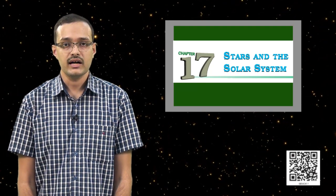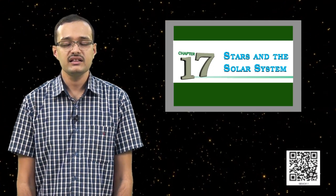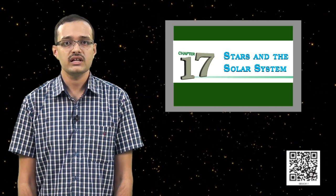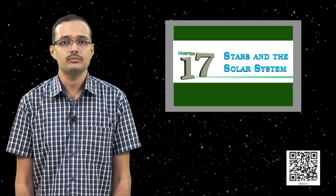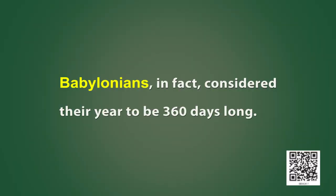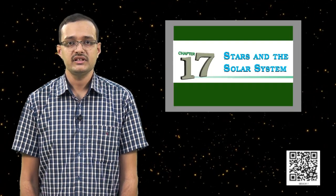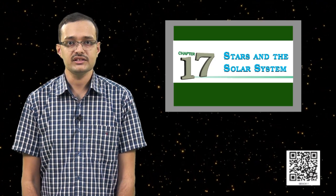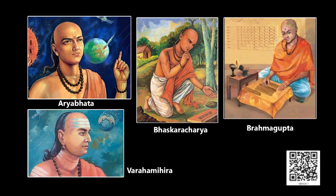For example, our ancestors observed that the position of the sun in the sky repeats itself once every 360 days approximately. This led to the idea that a year is approximately 365 days long. The Babylonians, who are one of the ancient civilizations, considered their year to be 360 days long. The roots of Indian astronomy can be traced back all the way to the Indus Valley civilization. Some of the early Indian astronomers include Aryabhata, Bhaskaracharya, Brahmagupta, Varahamhira and others. These astronomers lived between the 4th and 6th century AD.